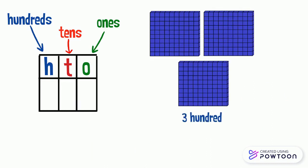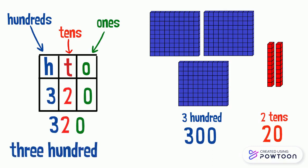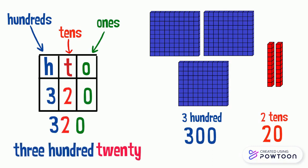Three hundred and two tens. We will write three in the hundreds column, two in the tens column, and since we don't have ones, we put zero. Three blocks of hundred equals three hundred, two tens equals twenty. So the number is three hundred twenty.